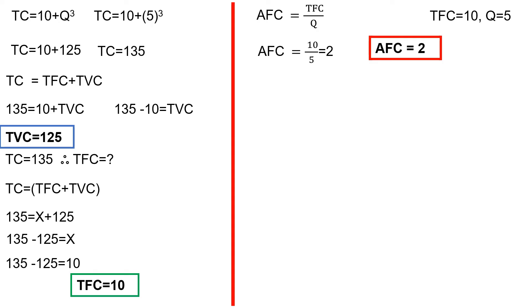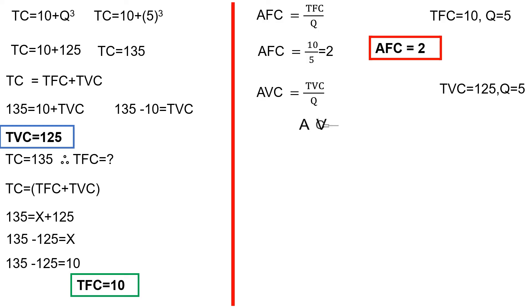Next, AVC is equal to TVC divided by q. TVC value is already known as 125. Substituting: 125 divided by 5 is equal to 25. Therefore, AVC is equal to 25.